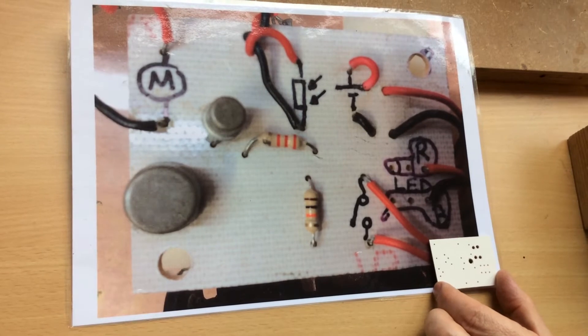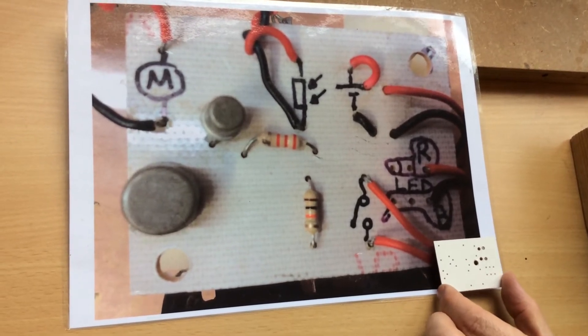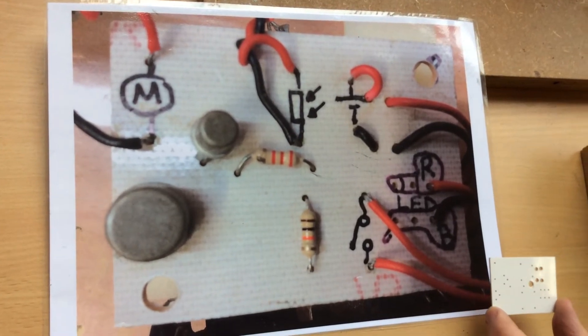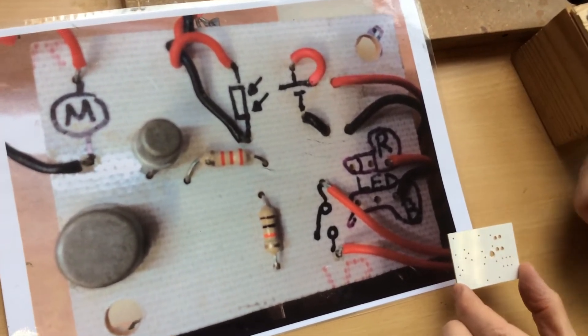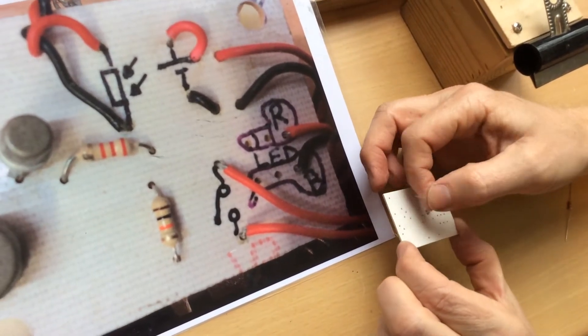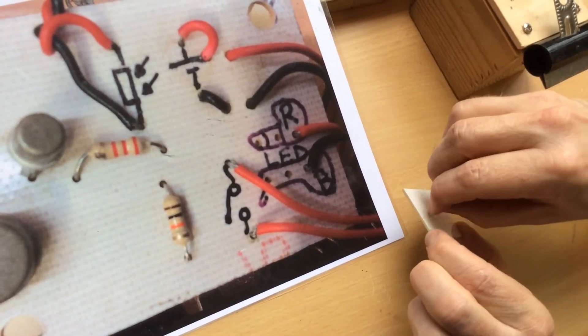They must go in the right place. It doesn't matter which way round they go, left to right or right to left, but as long as they go in the right place. So we'll take the red red red resistor first and that goes in one hole there and one hole there.